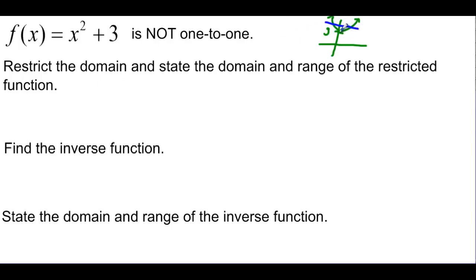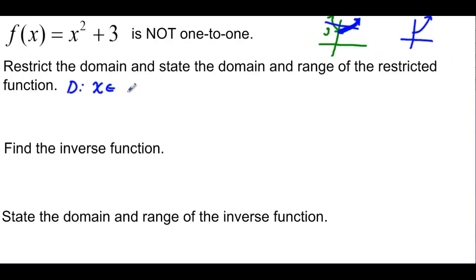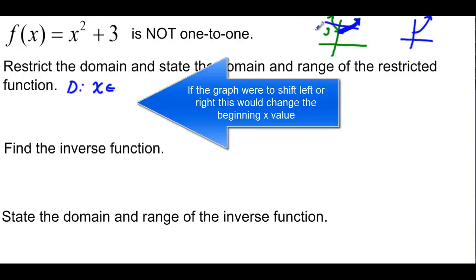It's not one-to-one. But if I could use only half of this graph, then I would have a one-to-one function. So I want to look at this part of the graph only. So to restrict that, I have to say that my domain now is going to be x is an element of, starting at 0 and going to infinity, instead of all reals, like the green graph was.